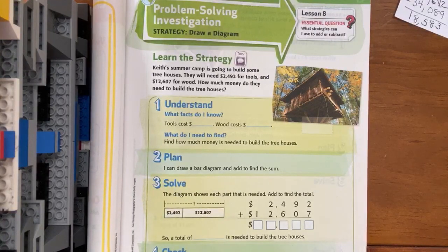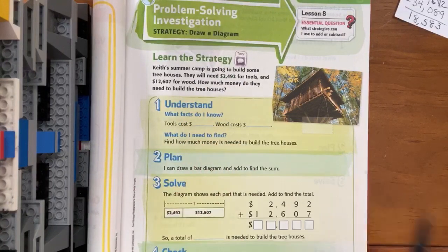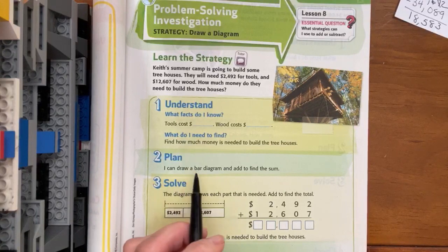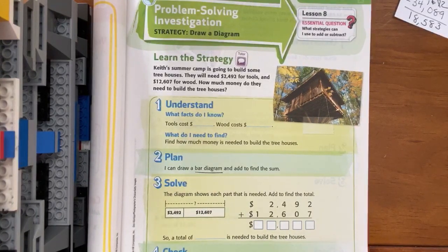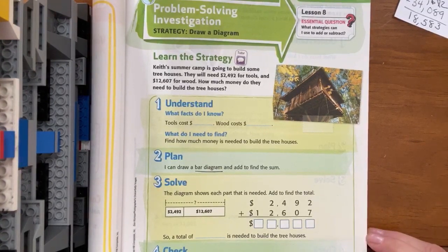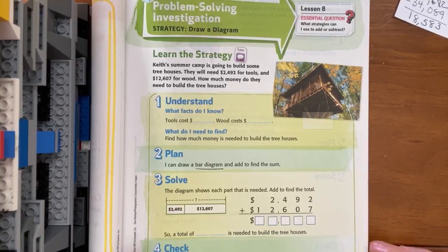In this one, the strategy is to draw a diagram. This diagram that we're going to draw is called a bar diagram, but eventually you'll be allowed to draw whatever diagram makes sense in your head to help you understand the story problem. For now, we're going to practice the bar diagram.